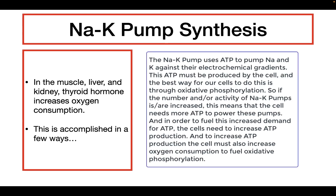The sodium-potassium pump uses ATP in order to pump sodium and potassium against their electrochemical gradients. In order to form a lot of ATP, we need to have oxygen. So if you increase the number or increase the activity of the sodium-potassium pump, this means that you are using more ATP. And if you're using more ATP, you need to produce more ATP. The best way to produce more ATP is to bring in more oxygen, therefore increasing oxygen consumption — each cell is going to be using more oxygen in order to produce more ATP.